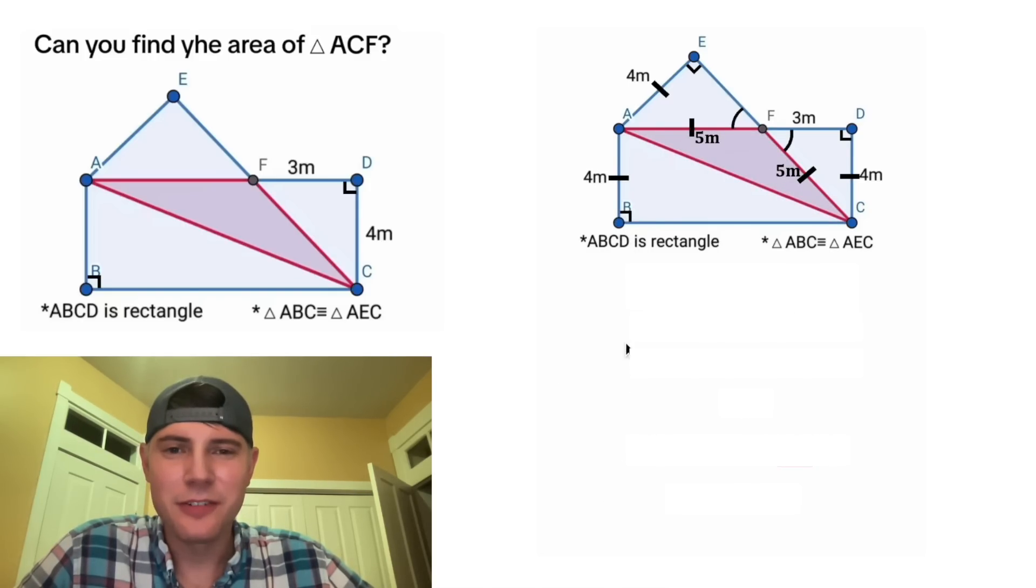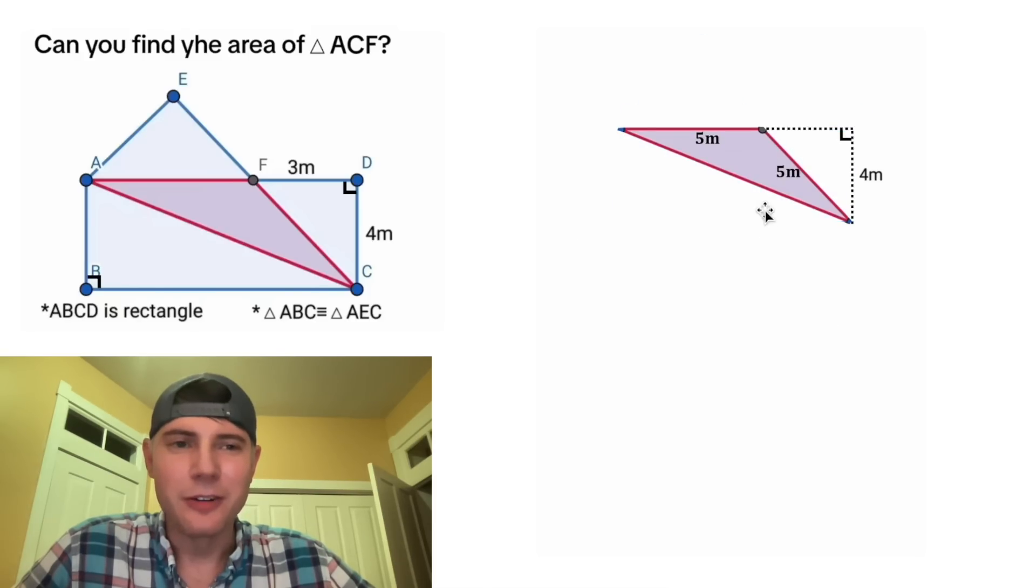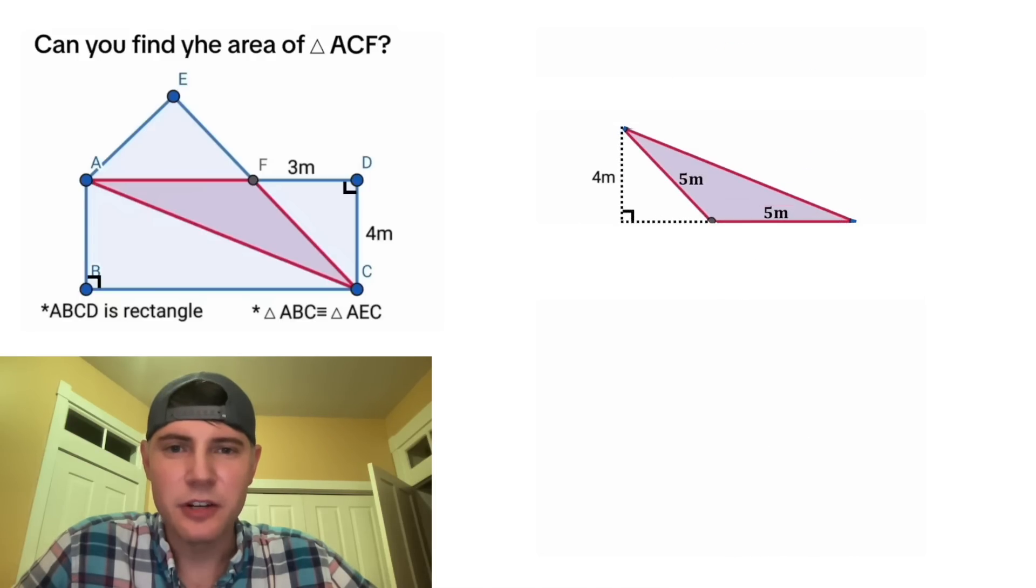Let's get rid of this stuff. And if you look at our red triangle, we have a base and we have a height. Give me a second, I'll make this easier to see. So there we go. Now we can see the base is 5 and the height is 4. And if it's easier, we can flip this. So here's the base of 5 and the height of 4.